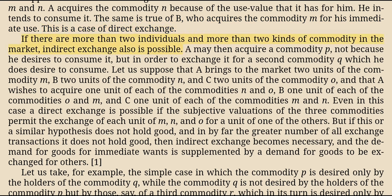If there are more than two individuals and more than two kinds of commodity in the market, indirect exchange also is possible. A may then acquire a commodity P, not because he desires to consume it, but in order to exchange it for a second commodity Q which he does desire to consume. Let us suppose that A brings to the market two units of commodity M, B two units of commodity N, and C two units of commodity O, and that A wishes to acquire one unit each of N and O, B one unit each of O and M, and C one unit each of M and N.